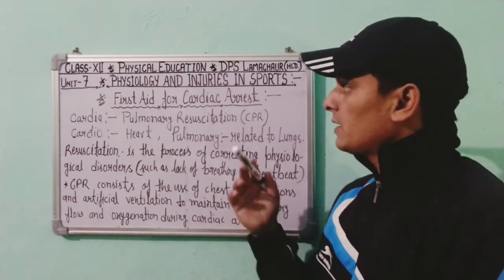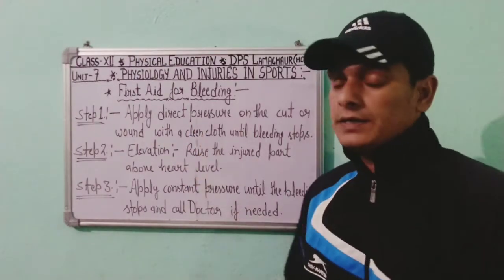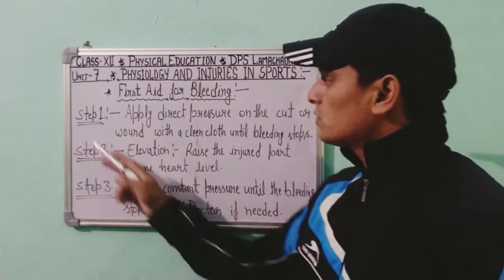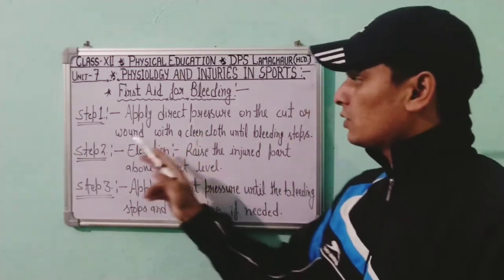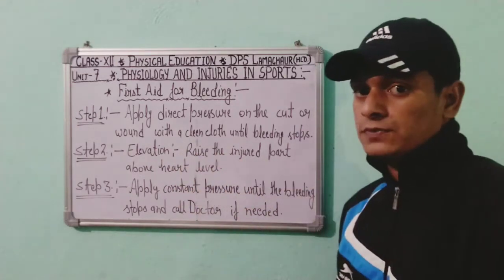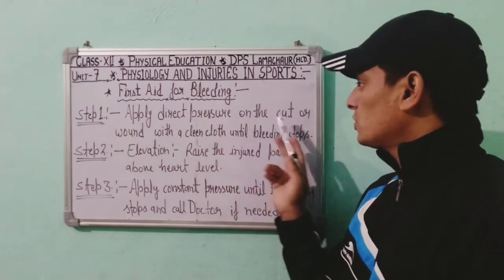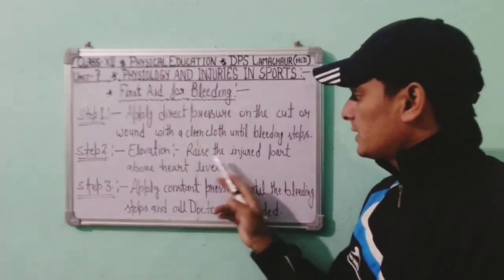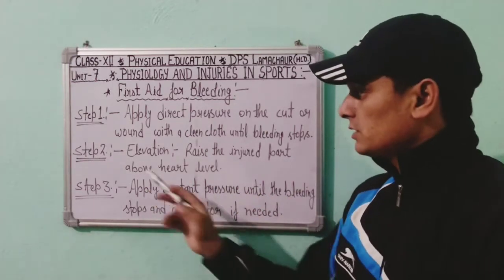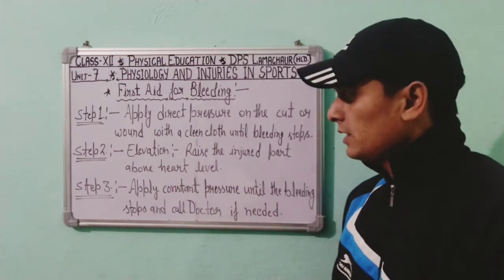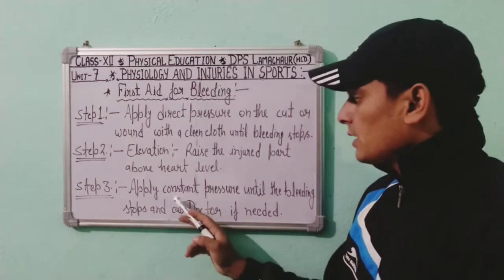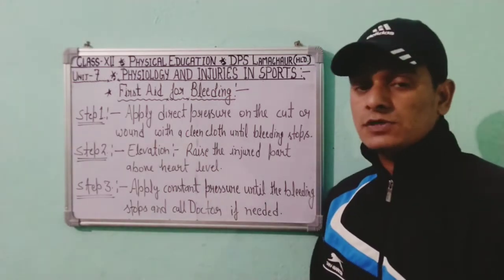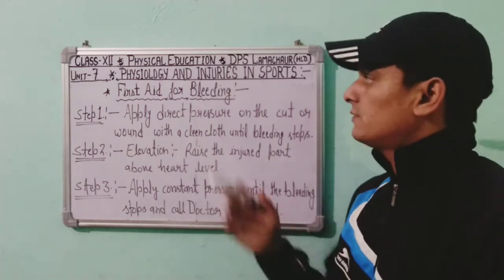Now let us know about first aid for bleeding. In the case of bleeding, follow three steps. Step one: apply direct pressure on the cut or wound with a clean cloth until bleeding stops. Step two — elevation: raise the injured part above heart level. Step three: apply constant pressure until the bleeding stops and call a doctor if needed.